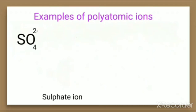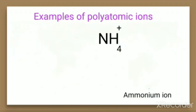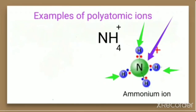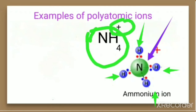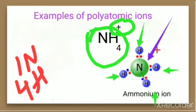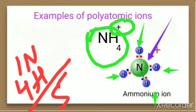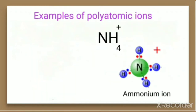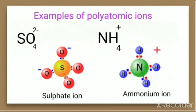Another example is the ammonium ion, NH₄⁺. In ammonium ion there are 4 hydrogen atoms and 1 nitrogen atom, so total 5 atoms are present. It carries a 1-positive charge. This is a group of atoms with a charge, so such ions are called polyatomic ions. These are the two familiar examples of polyatomic ions.